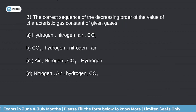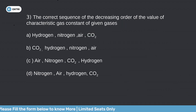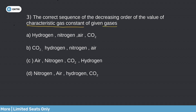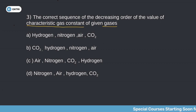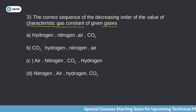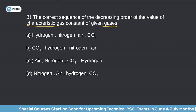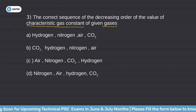Question 3: The correct sequence in decreasing order of the characteristic gas constant for the given gases — option A: hydrogen, nitrogen, air, carbon dioxide; option B: carbon dioxide, hydrogen, nitrogen, air; option C: air, nitrogen, carbon dioxide, hydrogen; option D: nitrogen, air, hydrogen, carbon dioxide. We need to determine the decreasing order of characteristic gas constants.